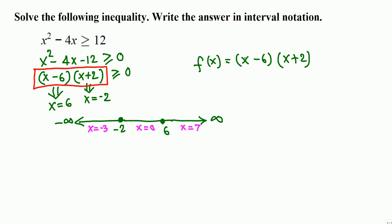If we plug in negative 3 we're going to get negative 3 minus 6 which is negative 9 times negative 3 plus 2, negative 1. Negative 9 times negative 1, negative times negative is positive. So we're going to get positive numbers. So I just write positive, plus.